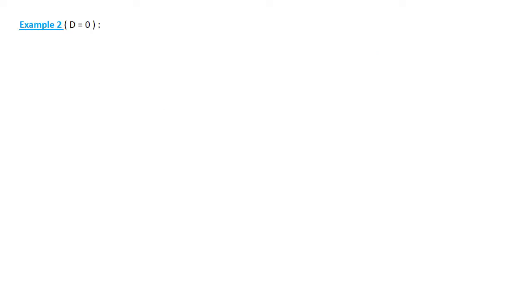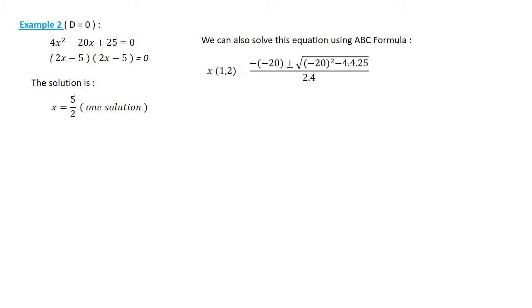Example 2: x² + 2x + 10 = 0. The solution is x = -1. We can also solve this equation using ABC formula. We have the same solution.